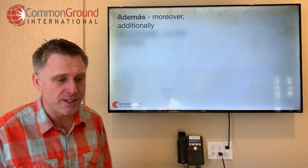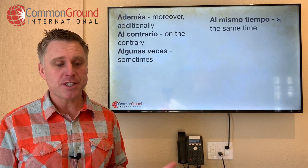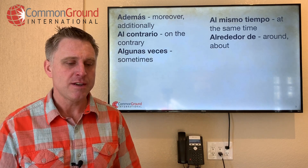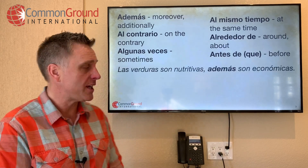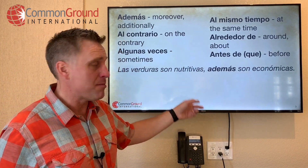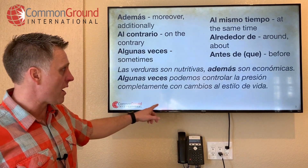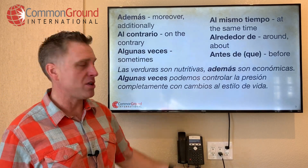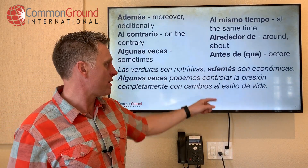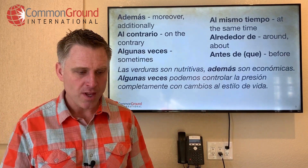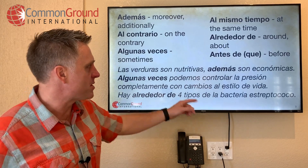Además — moreover or additionally. Al contrario — on the contrary. Algunas veces — sometimes. Al mismo tiempo — at the same time. Alrededor de — around or about. Antes de / antes de que — before. Example: Las verduras son nutritivas; además, son económicas — the vegetables are nutritious; moreover, they're economical. Algunas veces podemos controlar la presión completamente con cambios al estilo de vida — sometimes we can control blood pressure completely with lifestyle changes. Hay alrededor de cuatro tipos de bacteria estreptococo — there are around four types of streptococcus bacteria.